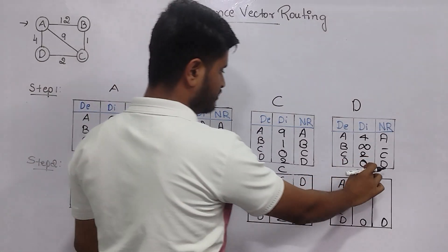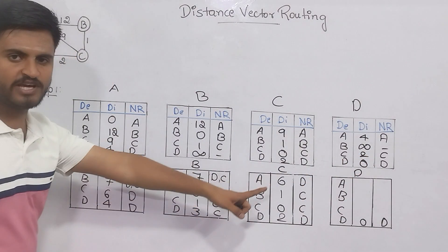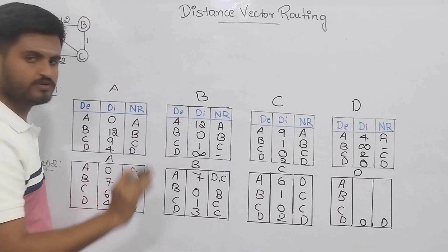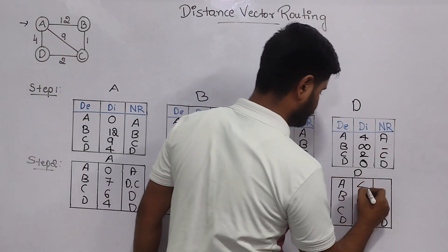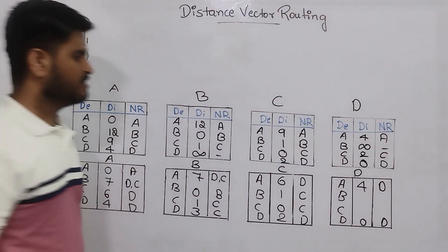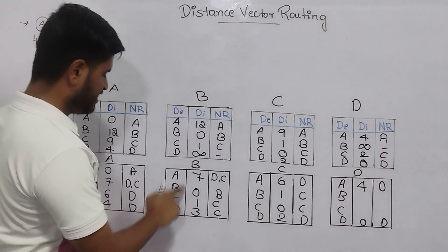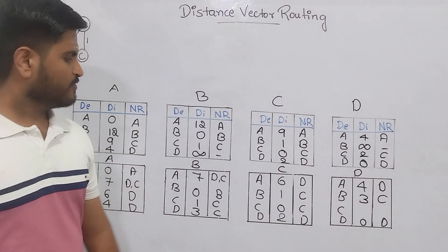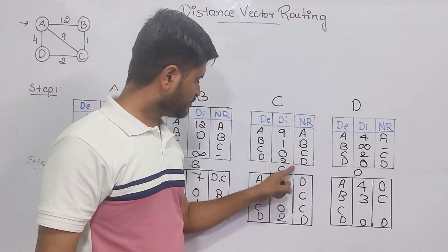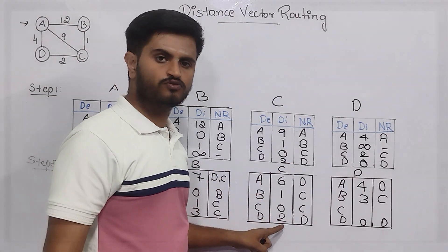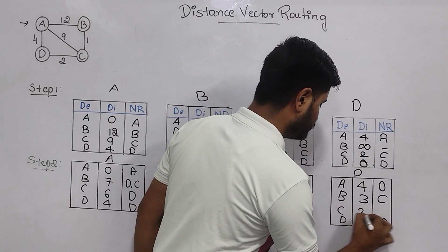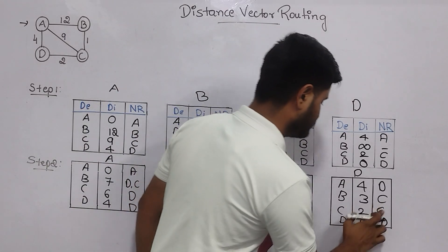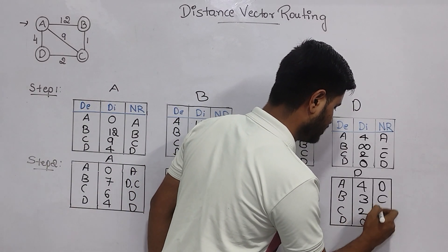From D to A: since A to D shortest distance is 4, from D to A it will also be 4, using router D. From D to B: since B to D shortest distance is 3, here also it is 3, using router C. From D to C: since C to D shortest distance is 2, from D to C it is also 2, using router D.